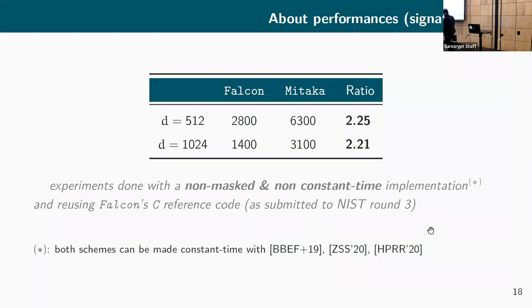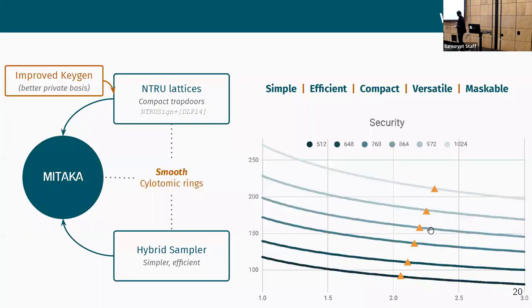To conclude with a bit of implementation results and practical things: we did some experiments on non-masked and non-constant-time implementation, even though they can be made constant-time with standard results in the literature. We're using Falcon C as a reference code and also using some parts of it such as the FFT. We have a scheme which is roughly two times faster than Falcon, so it's not really a surprise because if you count the number of multiplications you're making in the whole sampling algorithm, you have like half the multiplications which are done. To wrap up, we presented a variant of Falcon which uses this hybrid sampler and an improved keygen to have nice security properties. It's simple and efficient, it's compact, very versatile, and is maskable. Thank you for your attention.